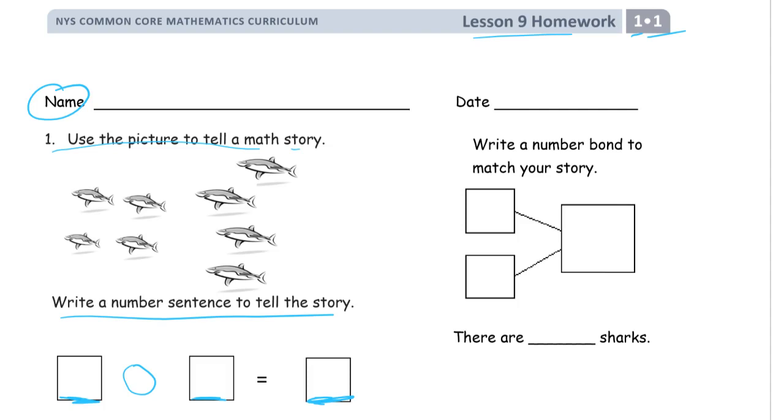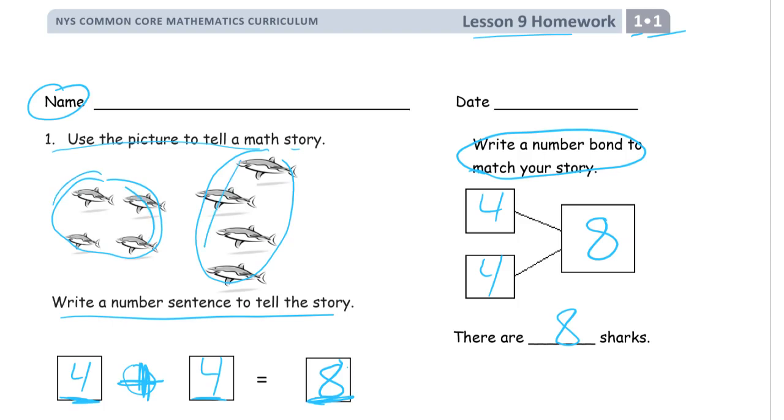We can say that there were, we've got sharks, right, so we've got a group of four sharks here, and we've got a group of four more sharks here. And we're going to add them together to get a total of eight sharks. Maybe they're chasing each other, maybe they're playing a game. And the number bond that matches this story. Your story is probably going to be better than mine.